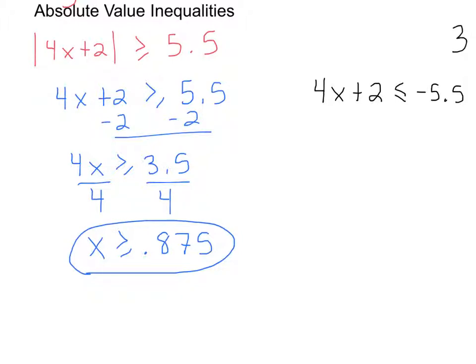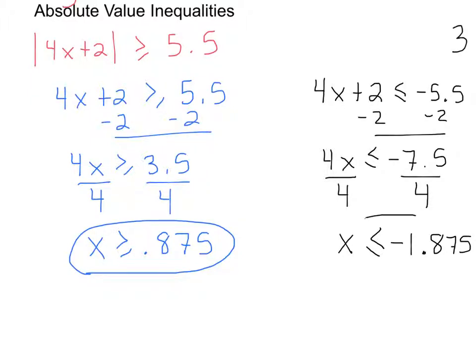Okay. On the other one, I'm also going to subtract 2 on both sides. So I get 4x is less than or equal to negative 7.5. Divide by 4 on both sides is exactly right. X is less than or equal to negative what? Negative 1.875. Good. Negative 1.875 is exactly right.